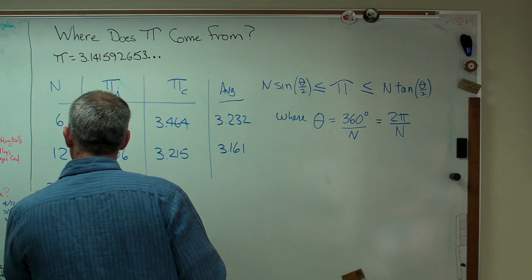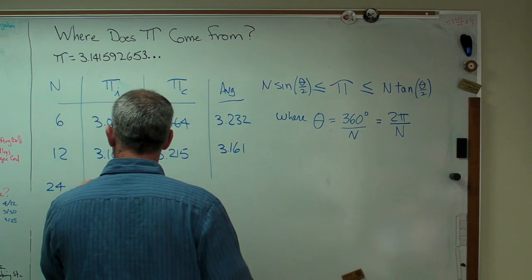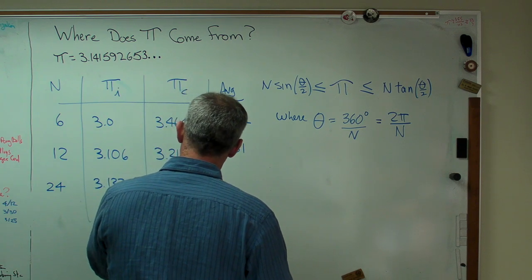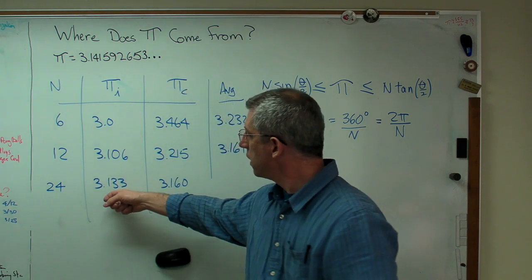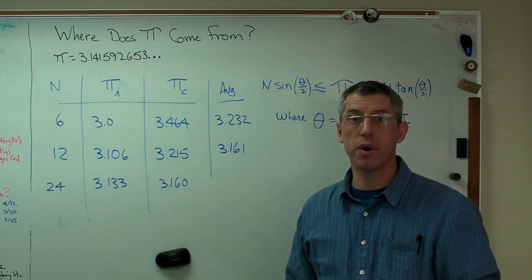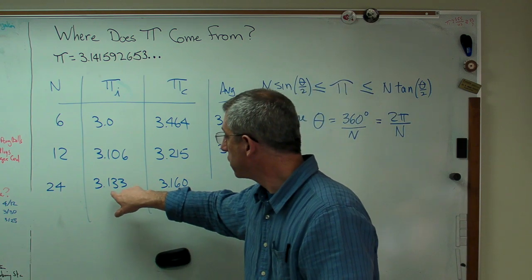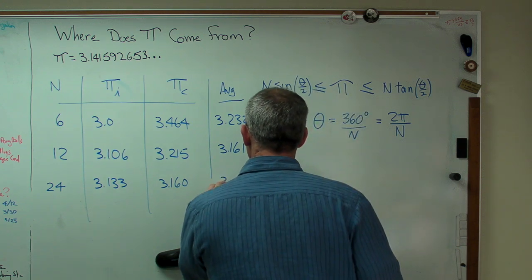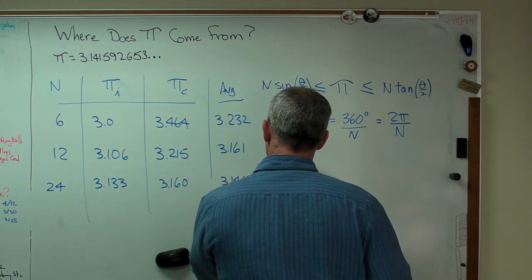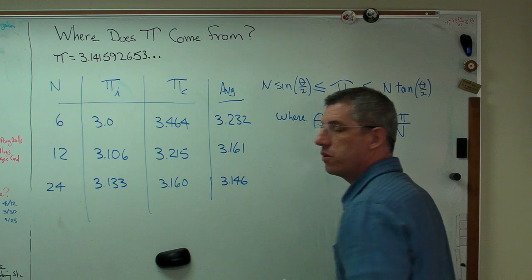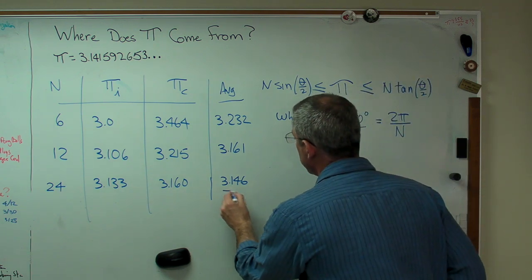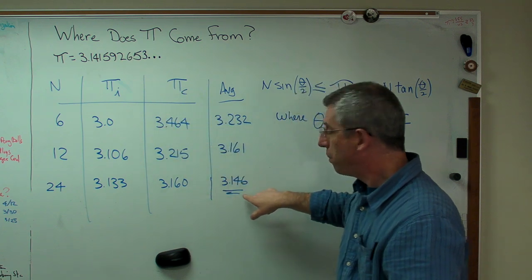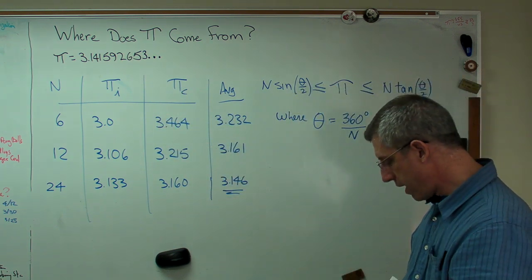So if we double the number of sides again to 24, we get these numbers. And again, you can see that the inscribed and circumscribed polygons straddle pi. Pi is bigger than that and less than that. And if you take the average again, there's what you get. Now, that's not equal to that by any stretch, but that's not bad. That's not bad at all.